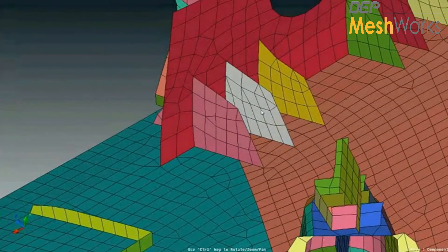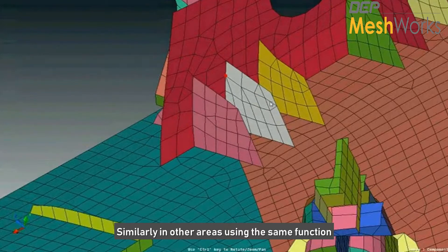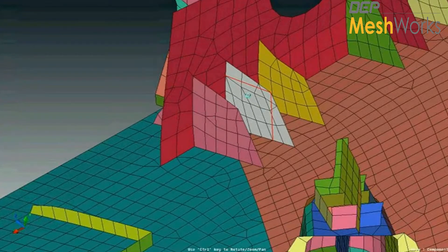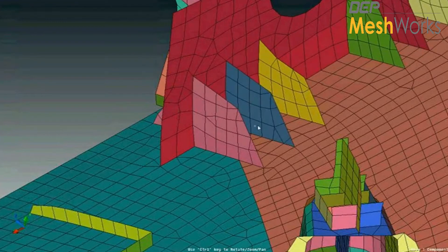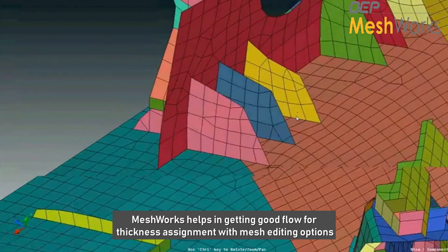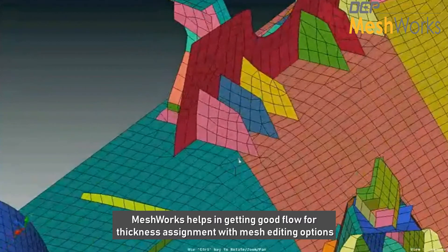So similarly, I can choose the other areas as well. Typically, I am just trying to discretize these elements and get a good flow so that it is going to be useful during my thickness assignment stage.